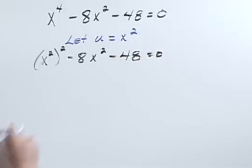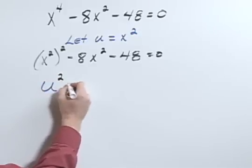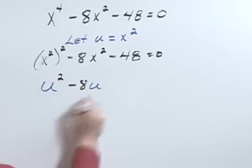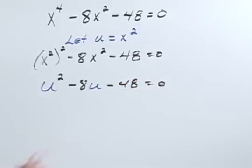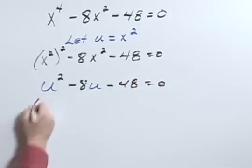And then when I do my substitution, it becomes u squared minus 8u minus 48 equals zero. Now we have a quadratic, a quadratic that we can try to factor.